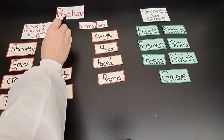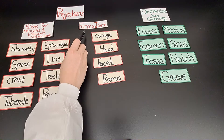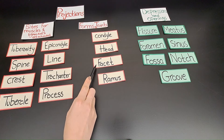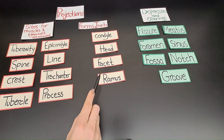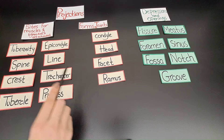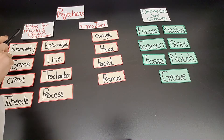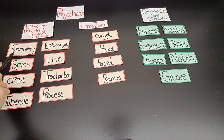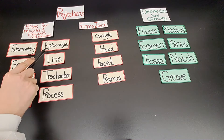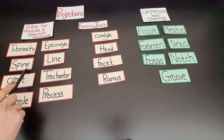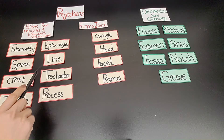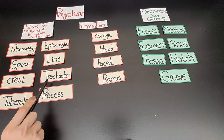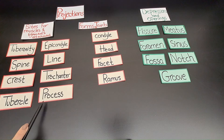Bone markings that form projections — these projections either form joints, such as a condyle, a head, a facet, a ramus, or projections that are sites for muscles and ligaments attachment, such as a tuberosity, an epicondyle, a spine, a line, a crest, a trochanter, a tubercle, and a process.